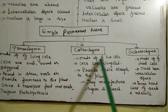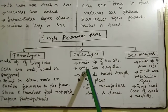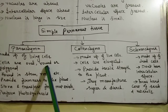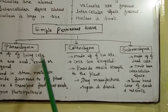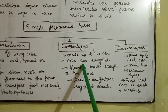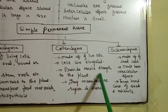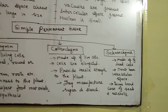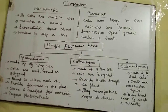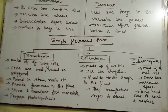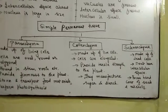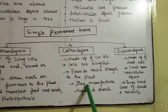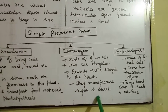Colenchyma is made up of living cells, and the cells are elongated. They also have intercellular spaces between them. They provide tensile strength to the plant. When the plant grows and develops, it needs strength, and colenchyma provides that. Their function also includes the manufacture of sugar and starch.